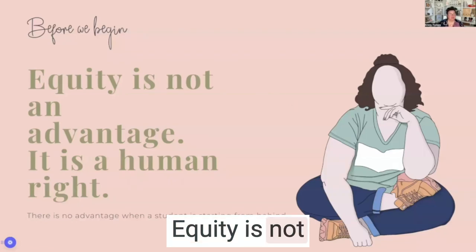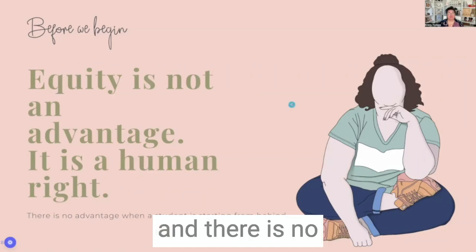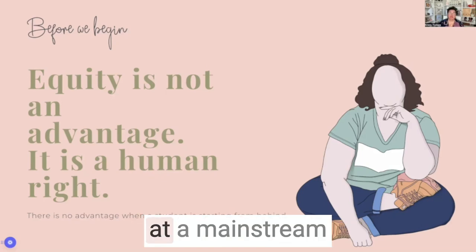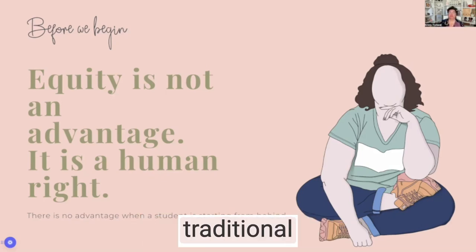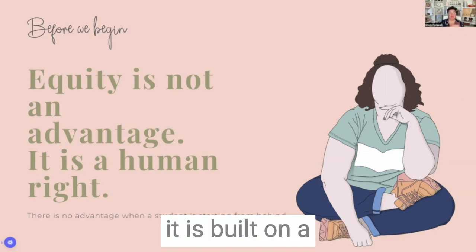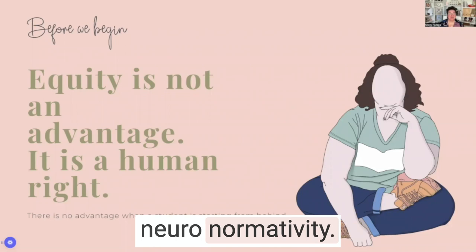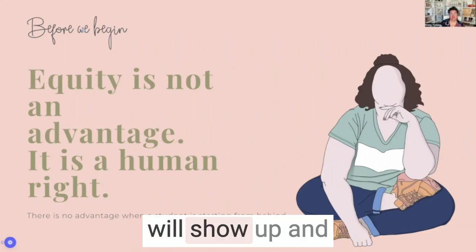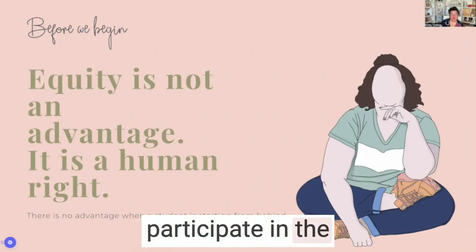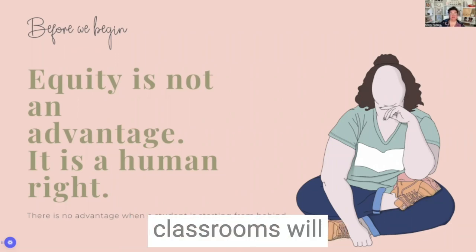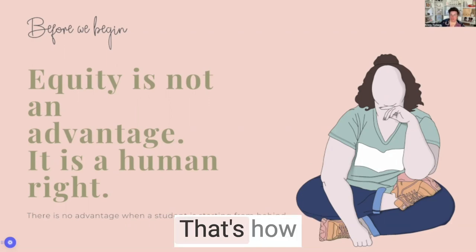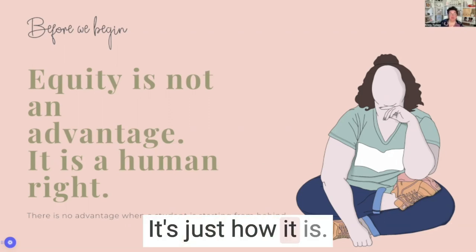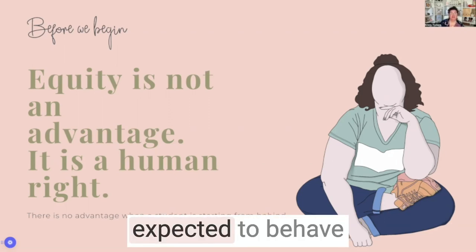Equity is not an advantage, it is a human right, and there is no advantage when a student is starting from behind. When we look at a mainstream traditional neuronormative classroom setting, it is built on a foundation of neuronormativity — an assumption that students who show up and participate in the curriculum will be neurotypical. That's how society works, and that doesn't mean it's right or okay, it's just how it is.